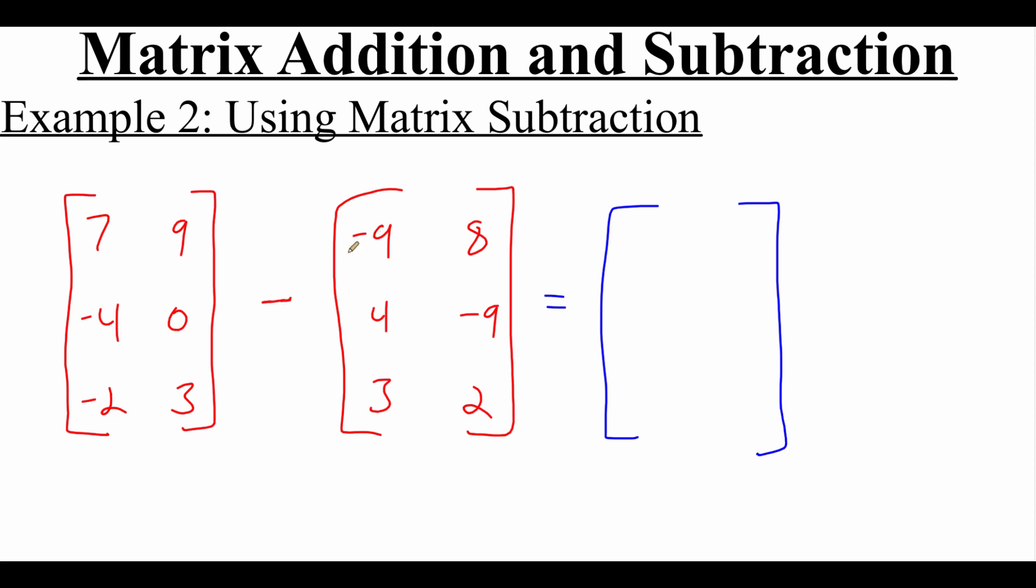So 7 minus negative 9. Double negative turns positive. So this is going to be 16. 9 minus 8 is 1. Negative 4 minus 4 is going to be negative 8.